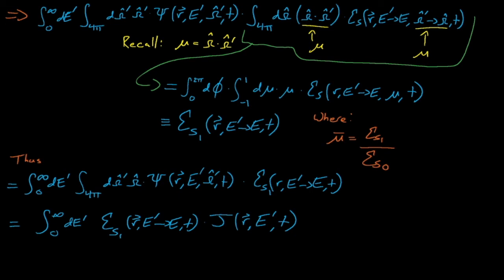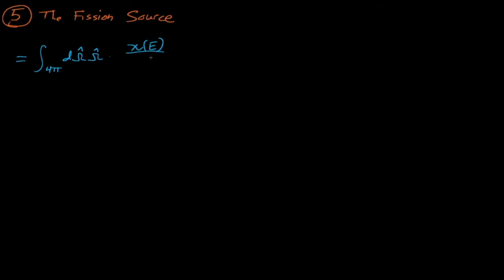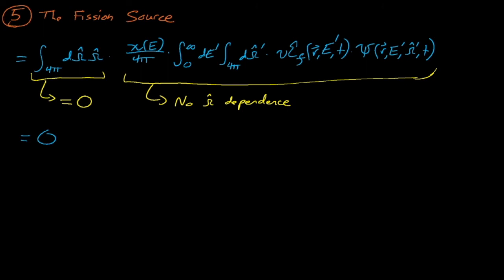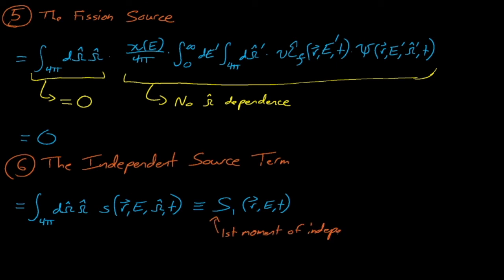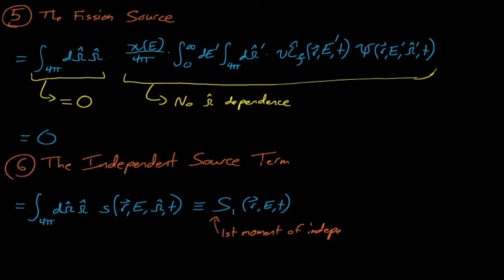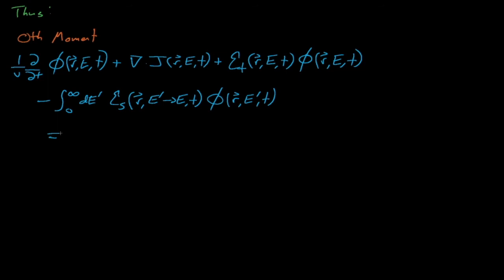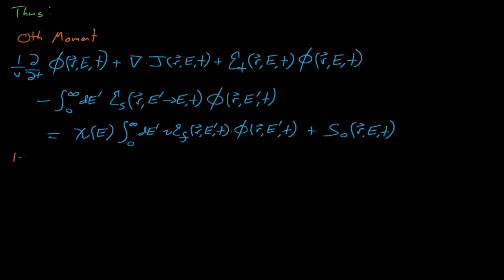The fission source is one of the easier terms to handle once again. The inner integral in this expression again contains no omega dependence, so we can evaluate the omega integral on the outside by itself. We'll prove this later on in a homework assignment, but it turns out that integrating omega d omega over all 4 pi simply equals zero, which completely eliminates the first moment of the fission source. Lastly, we will treat the first moment of the independent neutron source by defining this ambiguous first moment of s term, which is just s1. After all this work, we end up with these two simultaneous equations that describe the zeroth and first moments of the Boltzmann transport equation. It's worth noting that this process has introduced no inherent approximations to the Boltzmann transport equation. We've simply employed some legal mathematical tricks and defined some terms when convenient.